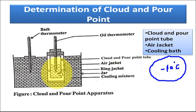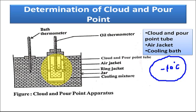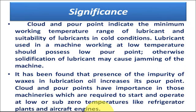The cloud and pour point tube is half-filled with the sample lubricating oil and thermometers are introduced. As cooling takes place via the air jacket, the temperature falls. The temperature at which cloudiness is first noticed is the cloud point. Cooling continues, and the temperature at which oil ceases to flow is the pour point — determined by turning the tube horizontal; if oil does not flow, the pour point has been reached.